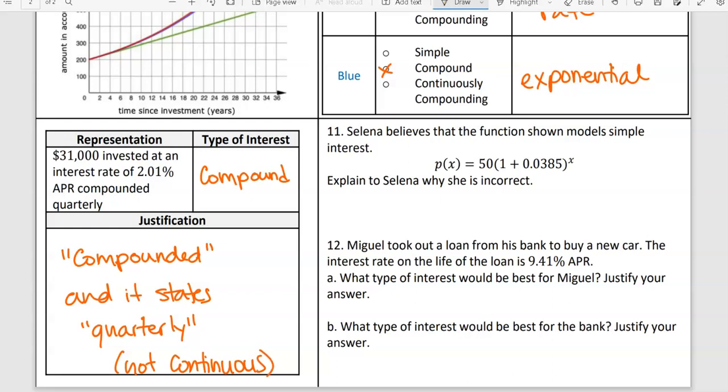Number 11. Selena believes that the function shown models simple interest. Explain why she's wrong. It's wrong because there is an exponent. So why is that not simple? Because simple interest, if it's constant, it's going to be linear. Simple interest is a line, it's a linear function. So that's why it should not be it.